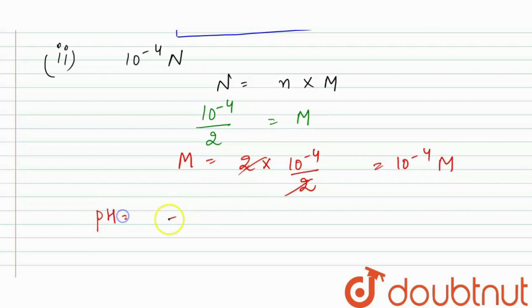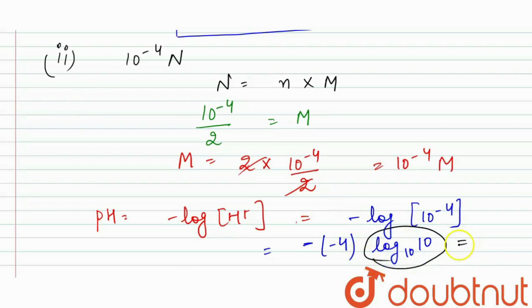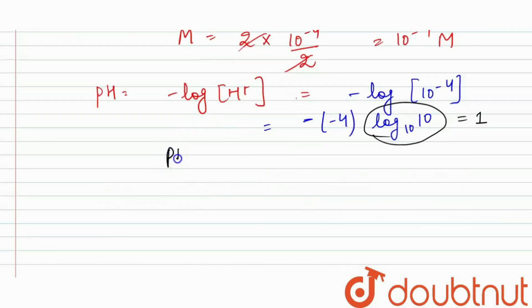Now, pH = −log[H⁺] = −log(10⁻⁴) = −(−4) × log₁₀(10). Since log₁₀(10) = 1, the pH value is equal to 4.